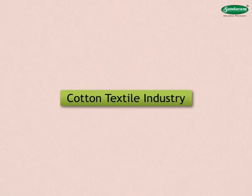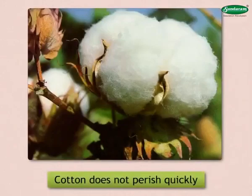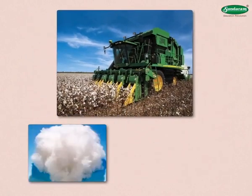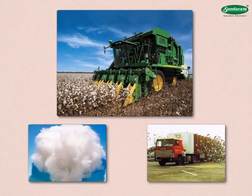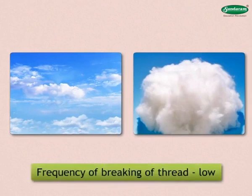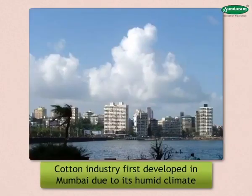Cotton textile industry. Availability of raw material and climate are the major factors that influence the location of this industry. Cotton does not perish quickly. After removing cotton seeds, cotton becomes lighter. As it does not lose weight during transport, it can be transported over long distances. In humid climate, long thread can be obtained from cotton and the frequency of breaking of thread is also low.